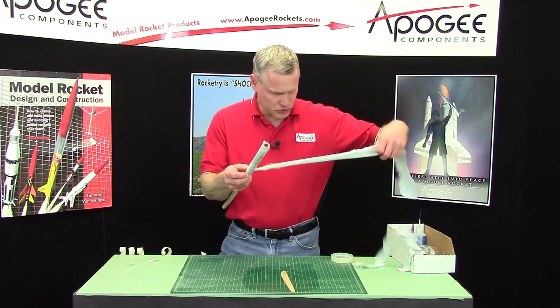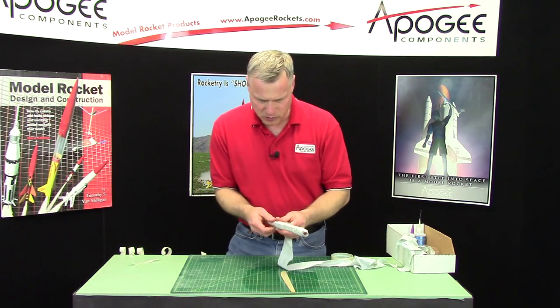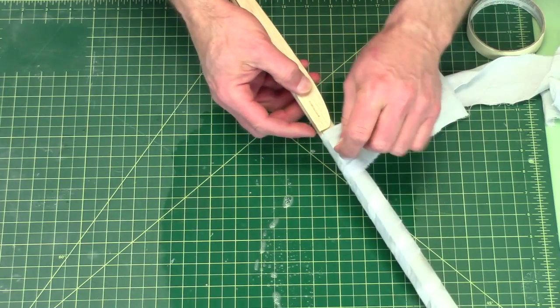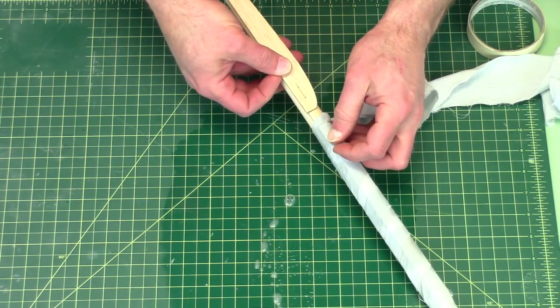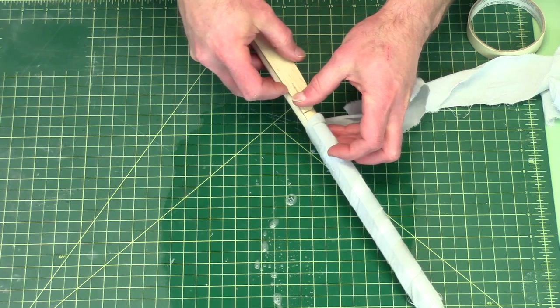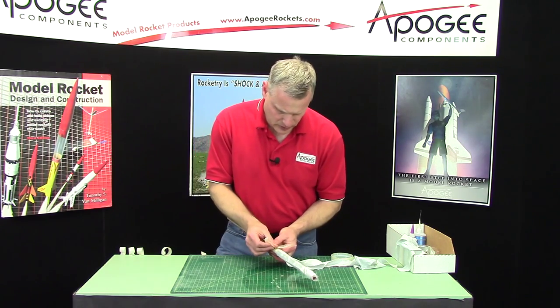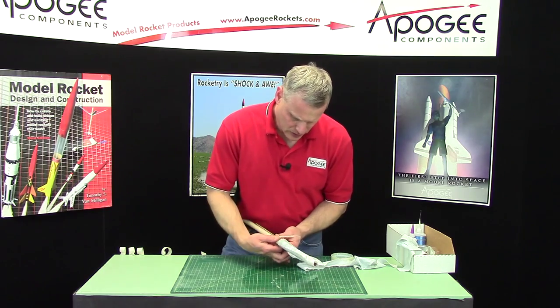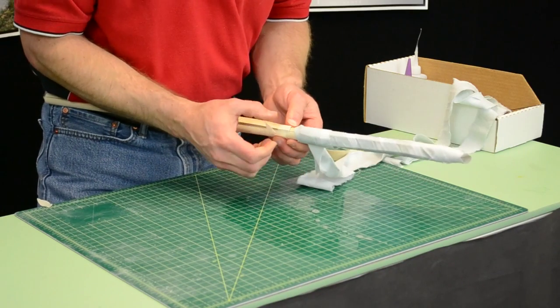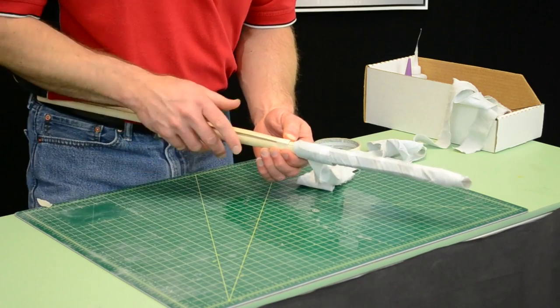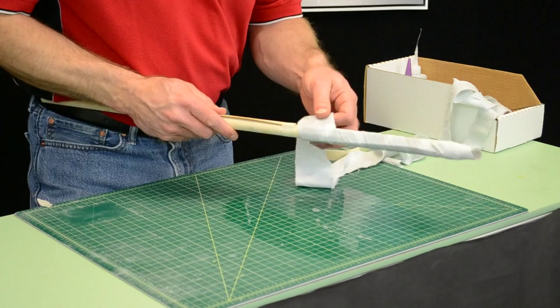Now depending on the length of your strip you may be able to start the last one right below it. This piece of tape is just to hold it there so I can start winding it around.